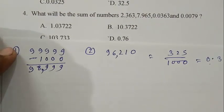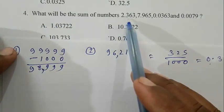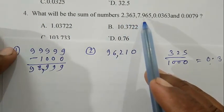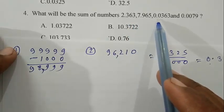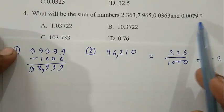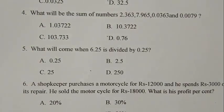Question number 4: What will be the sum of numbers 2.363, 7.965, 0.0363, and 0.0079? We write the numbers one by one and then add them.